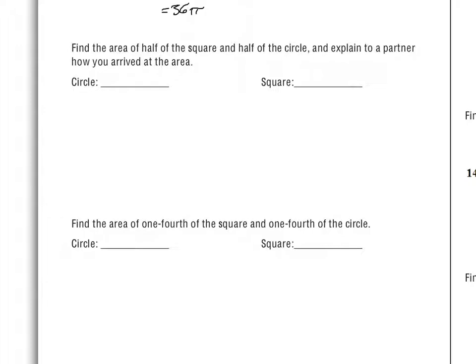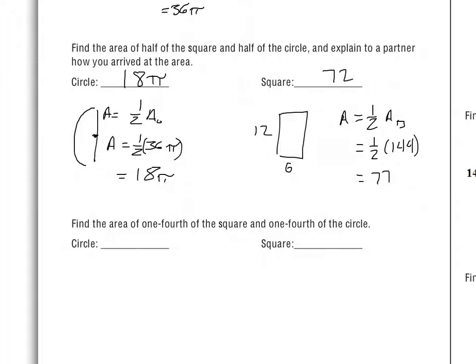The next part says: find the area of half of the square and half of the circle. Explain to a partner how you arrived at your answer. Hopefully you came up with 18π and 72 as your halves. We had the full area, and now we have half of that area — basically we folded it in half or cut off half of it, so we divided the area by 2. This is similar to finding circumferences of partial circles.